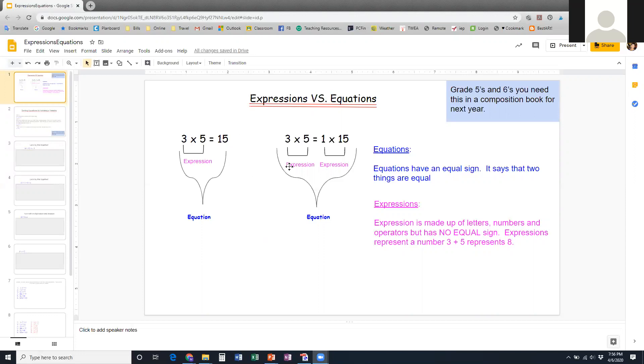The expression can be made up of letters, numbers, and operators, but it has no equal sign. So three times five, that's an expression. One times 15, that's an expression. If you've got two expressions on either side of an equal sign, they have to be the same. So three times five equals 15, one times 15 equals 15. If you don't have this in your interactive math notebook, you're going to want to pause and put this in.